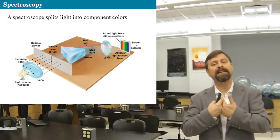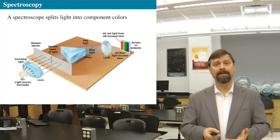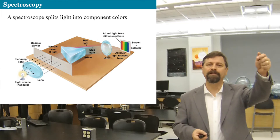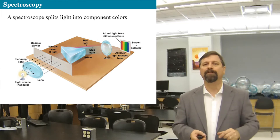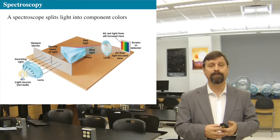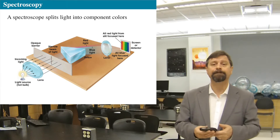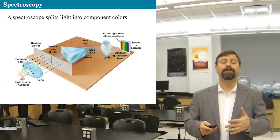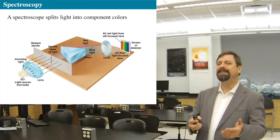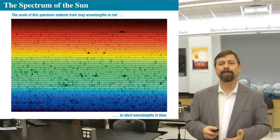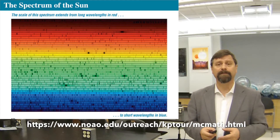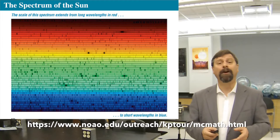If we look at more common things, like a garden household-variety prism or a crystal, you notice that there's always a pretty rainbow that comes off the sunlight. Pretty rainbows from sunlight are indicated here in this image from the McMath Solar Observatory down in Tucson, Arizona, run by NOAO.